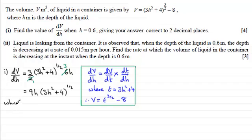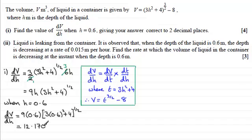Now we've got to find out the value of dV/dh when h equals 0.6. So when h equals 0.6, then we've therefore got dV by dh equals, and substituting 0.6 in gives us 9 times 0.6 multiplied by [3 times 0.6 all squared plus 4] to the power a half. And if you work that out in your calculator, you should find you get 12.170 and so on. And we've got to give the answer to two decimal places. So to two decimal places, that's going to be 12.17.